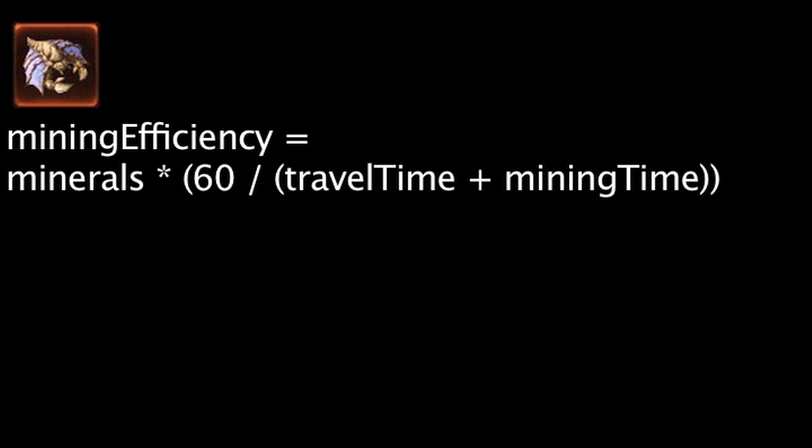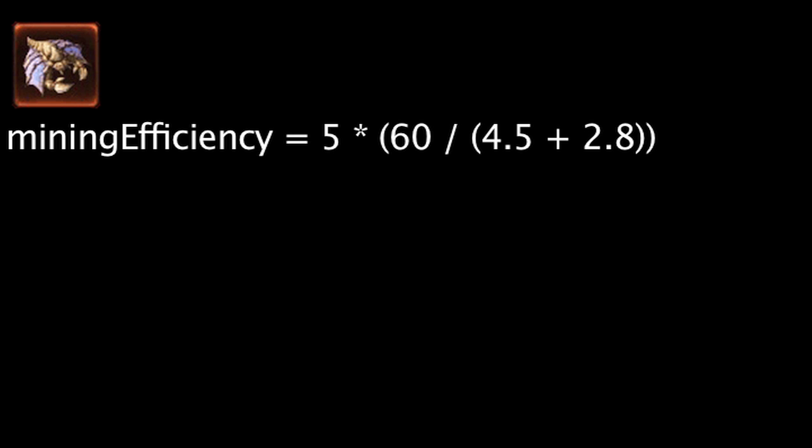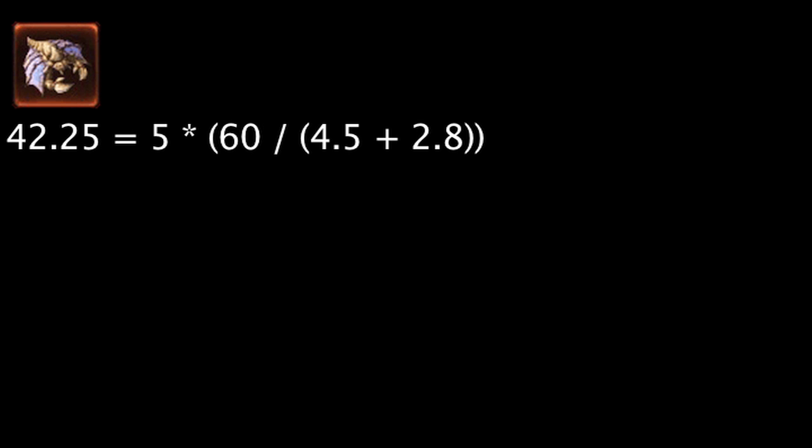A drone's mining efficiency per minute is equal to their minerals gathered times 60 divided by the time it takes them to move to and from the mineral patch plus the amount of time it takes for them to mine. It takes a drone about 4.5 seconds to travel and about 2.8 seconds to mine. This makes a drone's mining efficiency 42.25 minerals per minute.